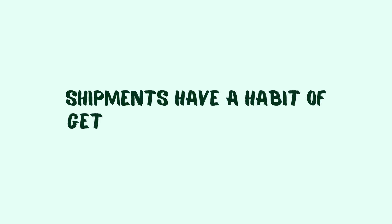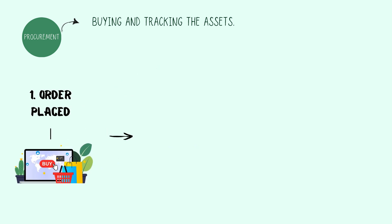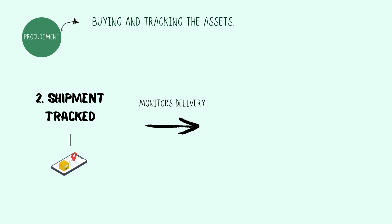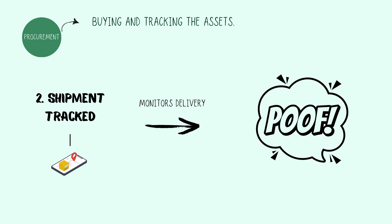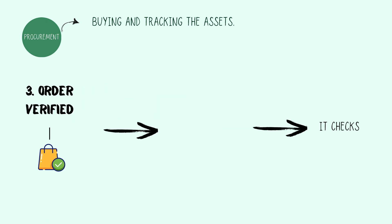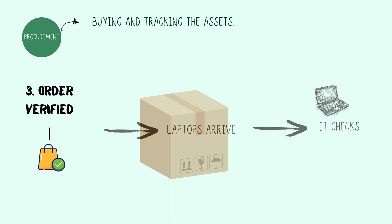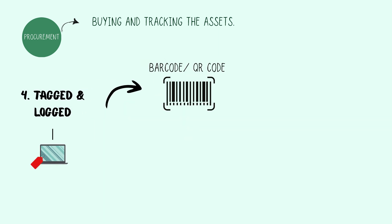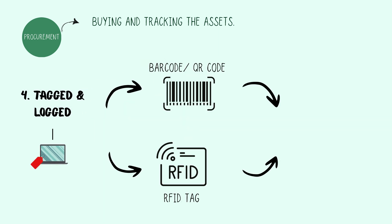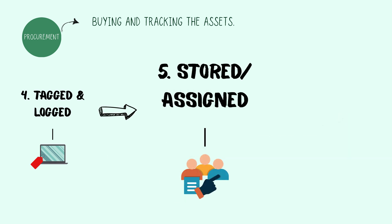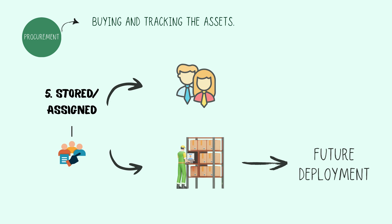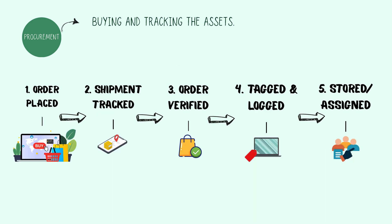Because shipments have a habit of getting lost in transit. Here's what actually happens: Order placed — IT submits a purchase order through the ERP system to track costs and approvals. Shipment tracked — IT monitors delivery with a tracking number and hopes it doesn't vanish in transit. Order verified — when the laptops arrive, IT checks everything matches the purchase order, because no one wants to open a box expecting laptops and find monitors. Laptops are tagged and logged — every device gets a barcode or RFID tag and is added to the IT asset management system. Some laptops go straight to employees, while others wait in inventory for future deployment.